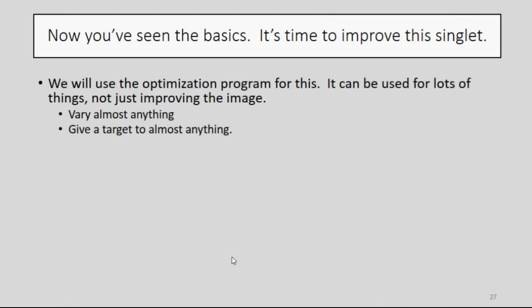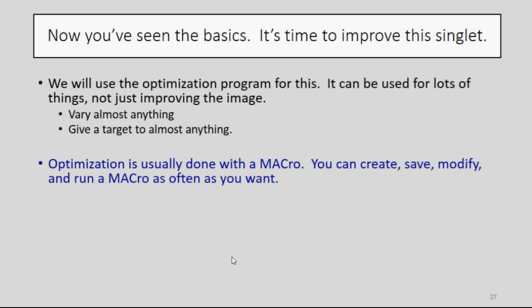You've seen the basics. Now let's try to improve this singlet. And we're going to use the Optimization program for this. Now that program is a real workhorse. It can be used for all kinds of things, not just improving the image. It can vary almost anything in the lens, and give a target to almost anything. And it's usually done with a macro, because you can create, save, modify, and run it as often as you want.